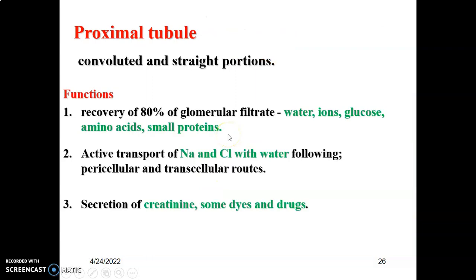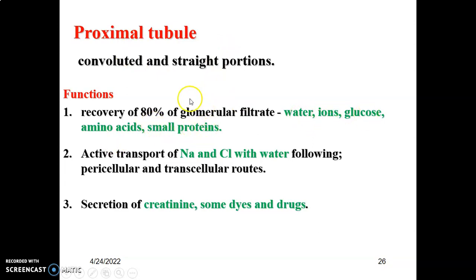Now we go to the proximal convoluted tubule. The proximal tubule has a convoluted and a straight portion. Its functions include reabsorption of 80% of the glomerular filtrate — water, ions, glucose, amino acids, and small proteins are reabsorbed back into the blood. So if they had been filtered into the provisional urine, you can recover them back.